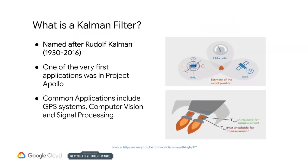Kalman filters are named after Rudolf Kalman, who is well known for his co-invention and development of this filter. It is a mathematical algorithm that is widely used in signal processing, control systems, and guidance, navigation, and control. Kalman filters were used during the Apollo program and furthermore in the NASA Space Shuttle, in Navy submarines, and in unmanned aerospace vehicles and weapons, such as cruise missiles. Your GPS system probably uses it today in your car.